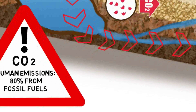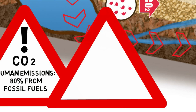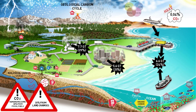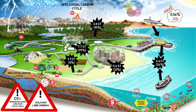Electricity and heat consumption in residential precincts add another 5.6 billion tons. The remaining 20% derives from the indirect impact of anthropogenic land changes. The removal of forests releases carbon into the atmosphere and decreases the biosphere's ability to reabsorb it. An estimated 2.8 billion tons of carbon dioxide are added every year due to deforestation practices.